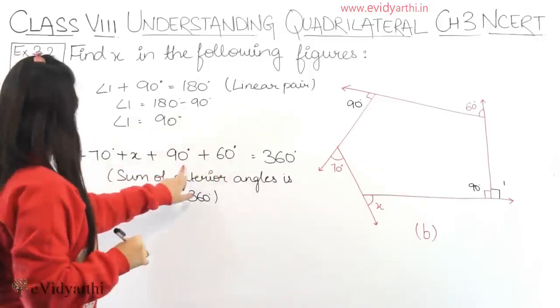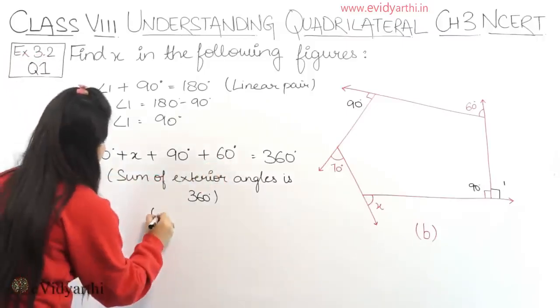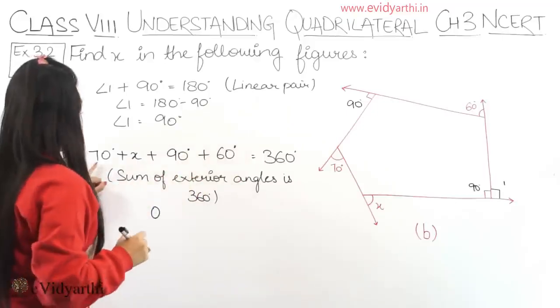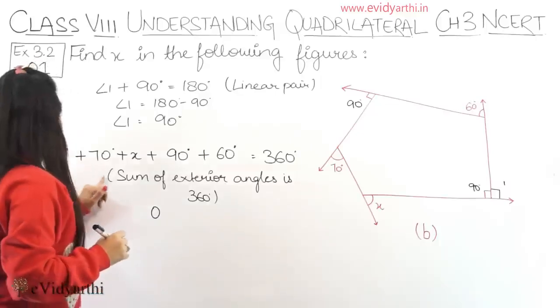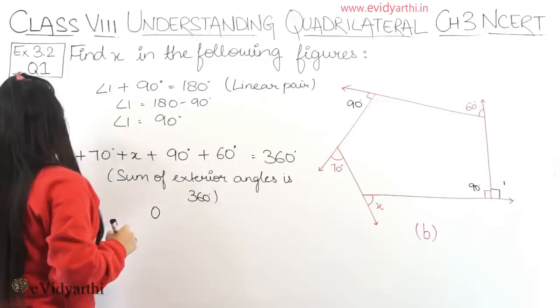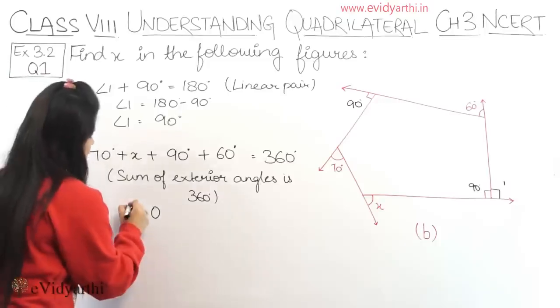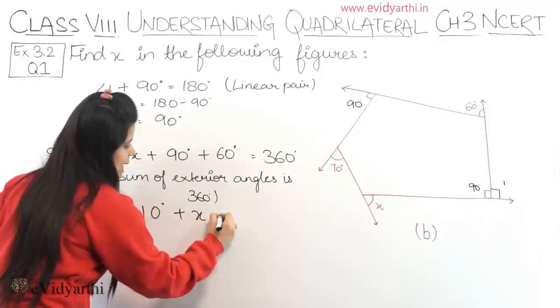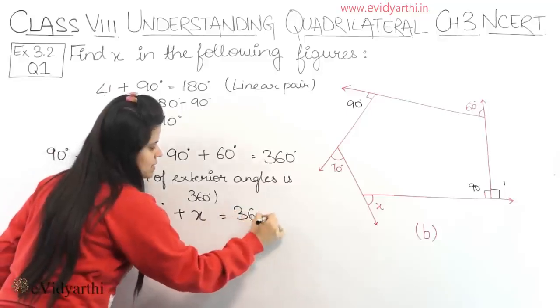Now we add this: 0, 0, 0, 0. This will be 0. Then 9 plus 6 is 15, then counting up we get 15, 16, 17, 18, 19, 20, 21, 22, 23, 24, 25, 26, 27, 28, 29, 30, 31. So this comes to 310 degrees plus x equals 360 degrees.